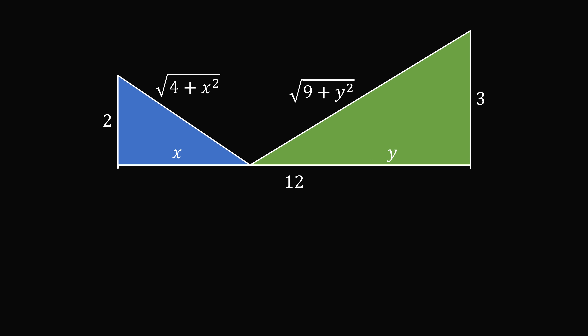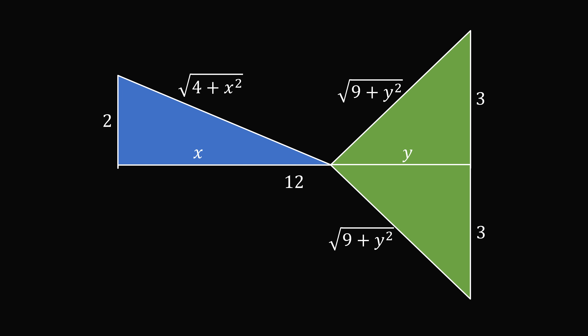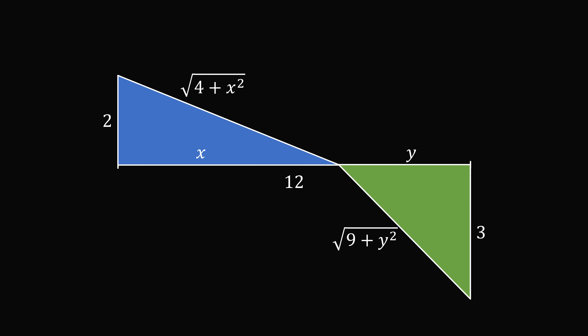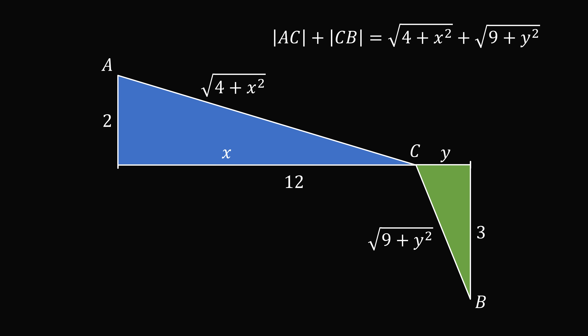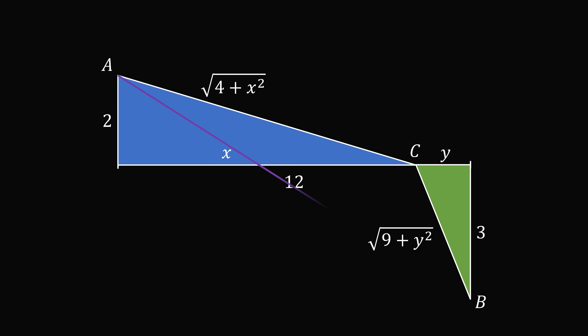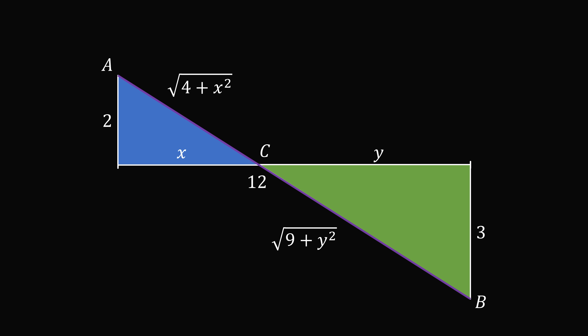At first it doesn't seem like we've simplified the problem — how do we minimize the sum of the hypotenuse lengths? We use another trick: reflect the green triangle over to the other side of the 12-unit line. Now we want to minimize the sum of two lengths: the upper-left point A to the junction point C, and C to the lower-right point B. By the principle of a straight line, this sum is minimized when A, C, and B are collinear, because a straight line is the shortest distance between two points.